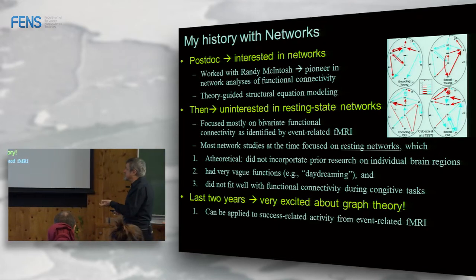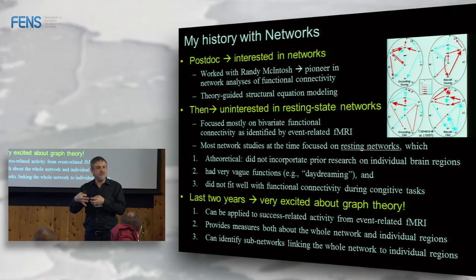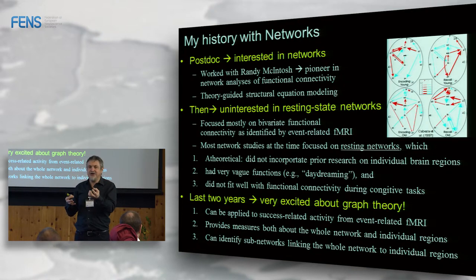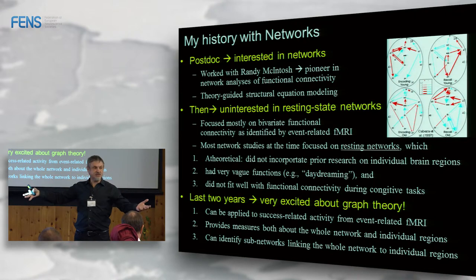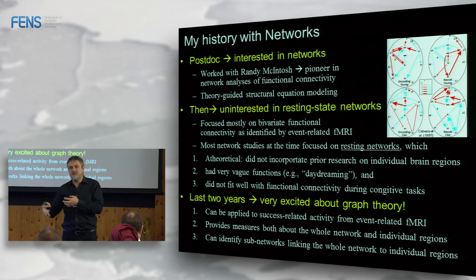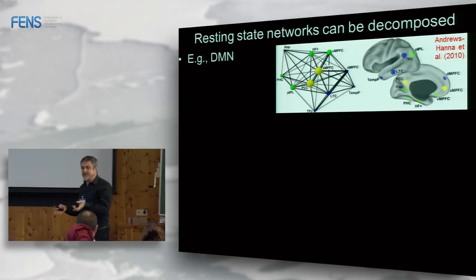Over the last couple of years, I became excited about graph theory because it lets you look at both the forest and the trees — the whole network, but also individual nodes whose function we can know from decades of research on specific brain regions, and link them to their role within a global network. It can be applied to success-related activity from event-related fMRI, which I think is critical. I'm also particularly interested in intermediate-scale networks between individual regions and the whole brain — like a CEO in an organization not directly connected to everyone, but through an intermediate cascade.